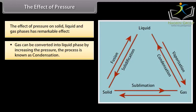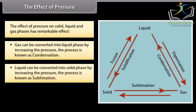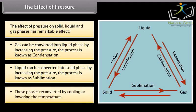Gas can be converted into liquid phase by increasing the pressure. The process is known as condensation. Liquid can be converted into solid phase by increasing the pressure. The process is known as sublimation. These phases reconverted by cooling or lowering the temperature.